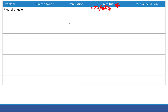For tracheal deviation, only worry about two things. First, tension pneumothorax can cause tracheal deviation because the air keeps accumulating in the pleural space and pushes surrounding structures. The other cause is atelectasis, which I'll talk about more later.